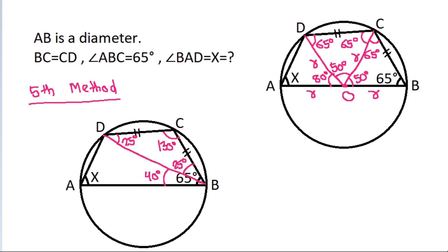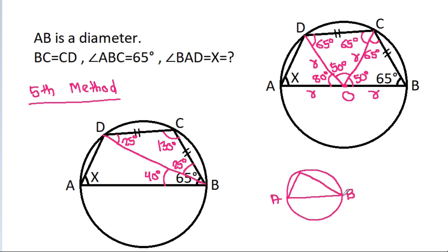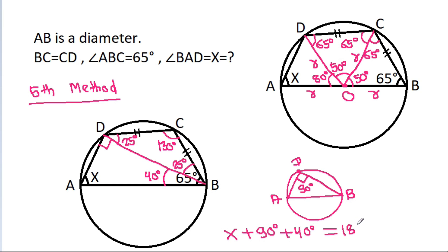In any circle, if AB is a diameter and we make an inscribed angle from it, that angle is 90 degrees. So the angle in the semicircle is 90 degrees. Therefore X plus 90 degrees plus 40 degrees equals 180 degrees, which means X equals 50 degrees.